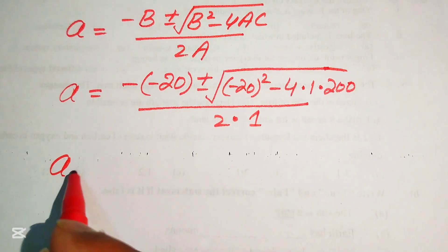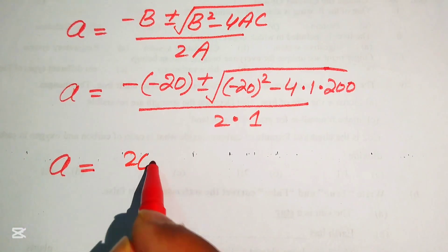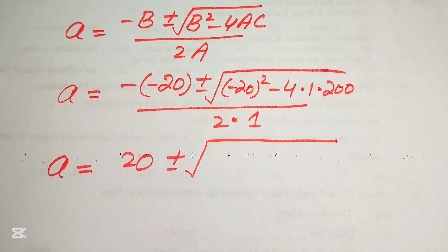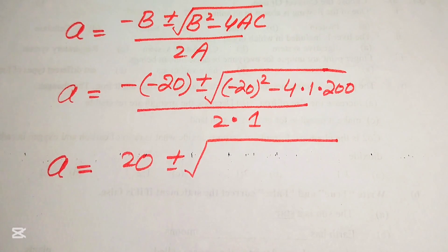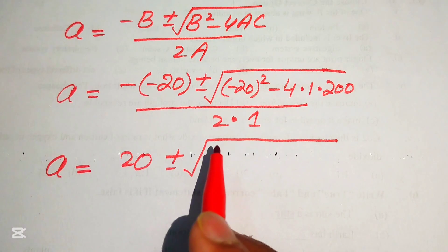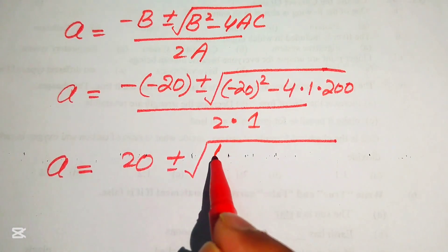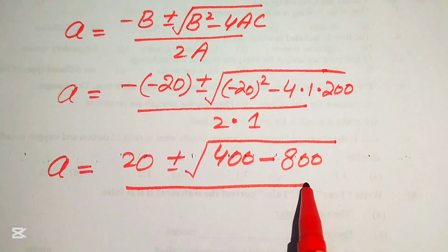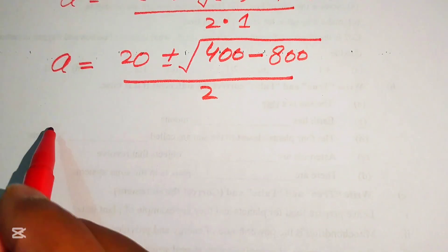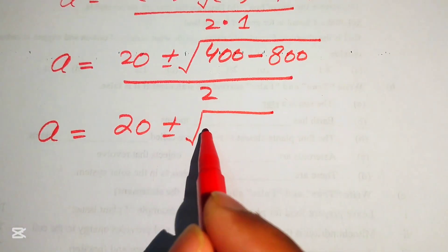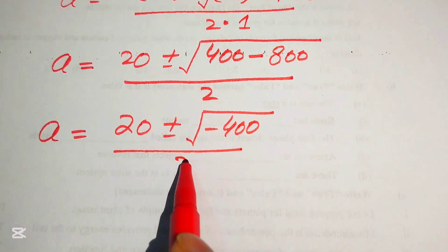Simplifying: a equals 20 plus or minus square root of (400 minus 800), divided by 2. Since (minus 20) squared equals 400, and 4 times 200 equals 800, the discriminant is 400 minus 800 equals minus 400. So we have a equals 20 plus or minus square root of (minus 400), divided by 2.